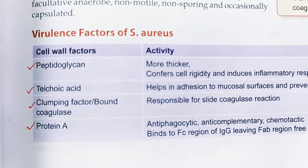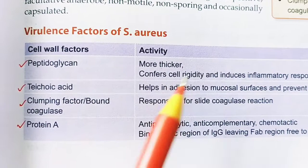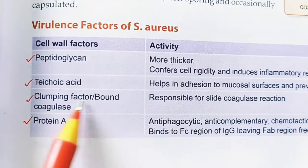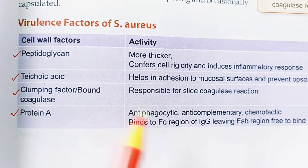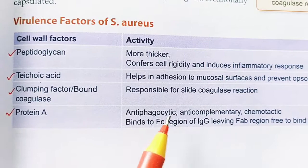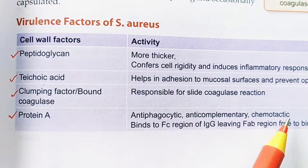The virulence factors of S. aureus include: peptidoglycan, which is thicker and provides cell rigidity; teichoic acid, which helps in adhesion to the mucosal surface and prevents opsonization; clumping factor, which is bound coagulase responsible for the slide coagulase reaction; and Protein A, which is antiphagocytic and anti-complementary — it binds to the Fc region of IgG, leaving the Fab free to bind antigen.